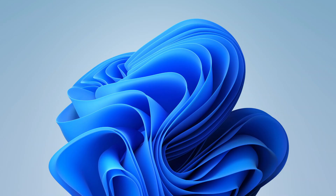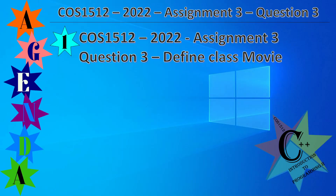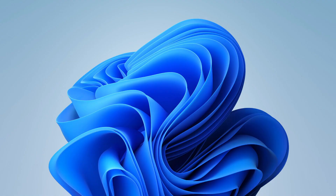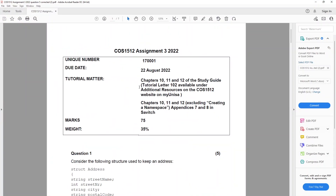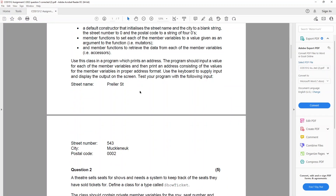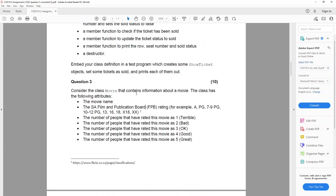Good evening. This evening I'm going to attempt to cover COS 1512 2022 Assignment 3 Question 3. This is with regards to defining a class called Movie, so let's go ahead and read what they've got to say. I will show it on the display quickly.